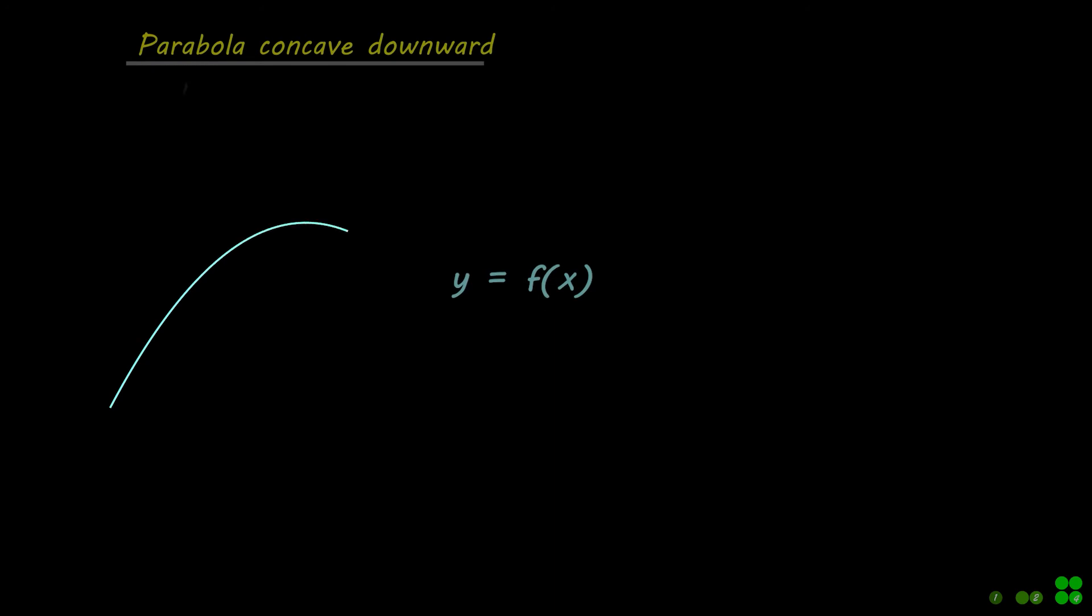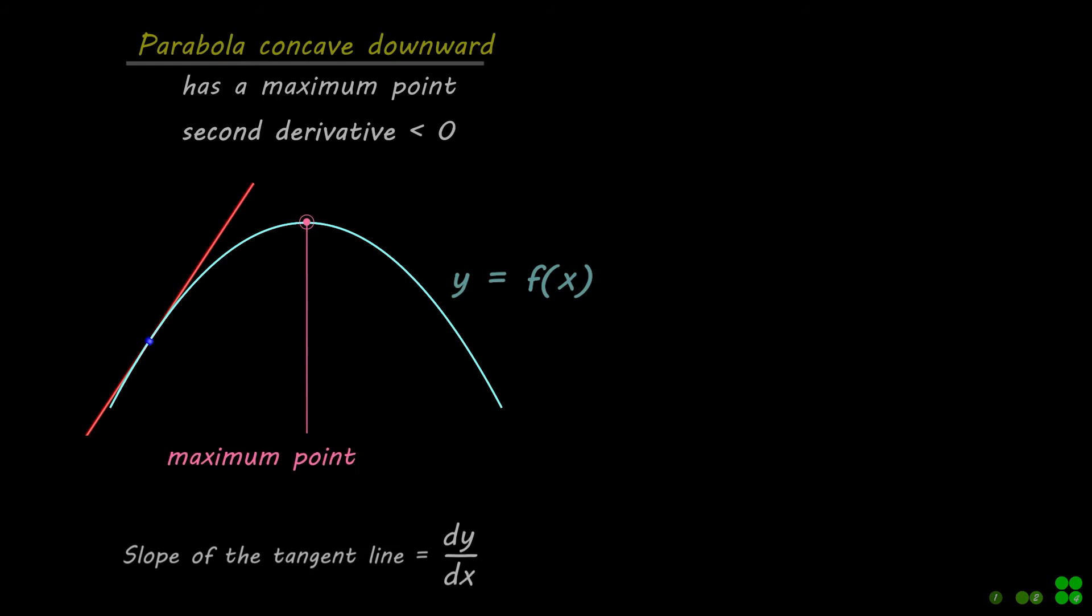The graph of a quadratic function is a U-shaped curve called a parabola, which can be concave upward or concave downward, as shown.